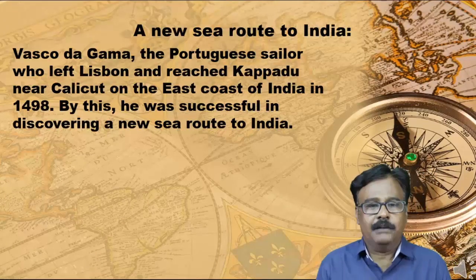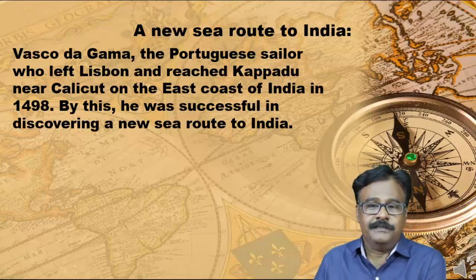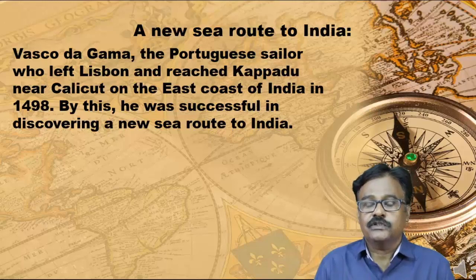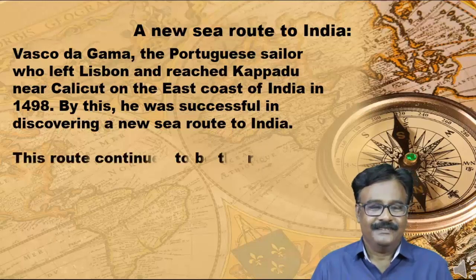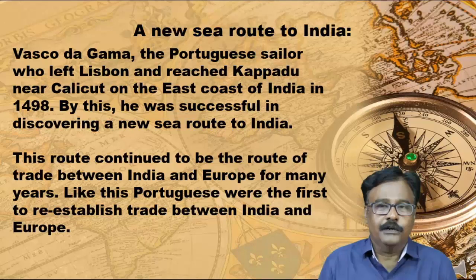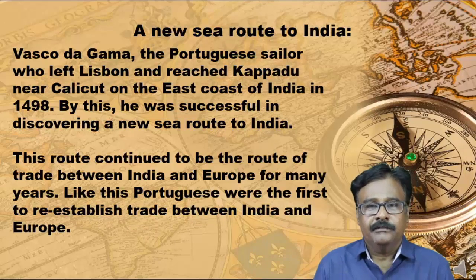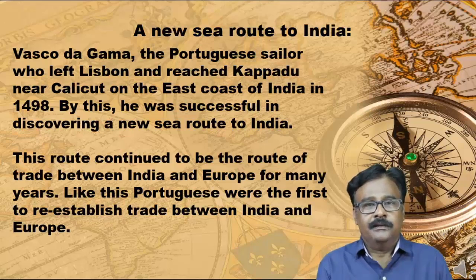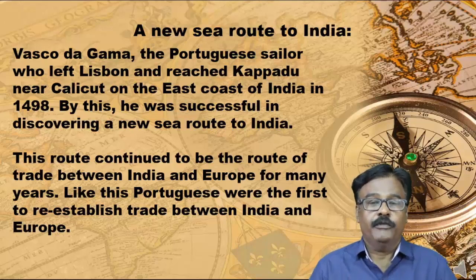A new sea route to India: Vasco da Gama, the Portuguese sailor, left Lisbon (which is in Portugal) and reached Kappad near Calicut on the west coast of India in 1498. By this voyage, he was successful in discovering a new sea route to India. This route continued to be the trade route between India and Europe for many years. The Portuguese were thus the first to re-establish trade between India and Europe after Constantinople was seized by the Ottoman Turks.